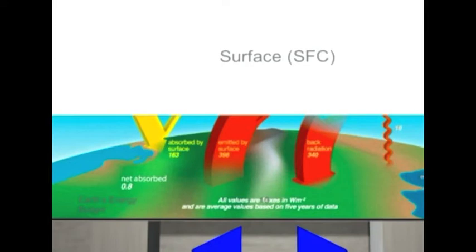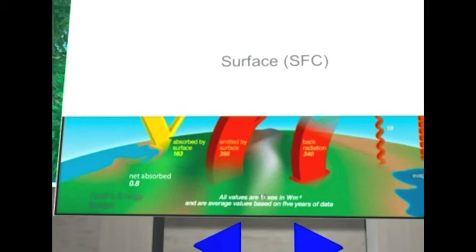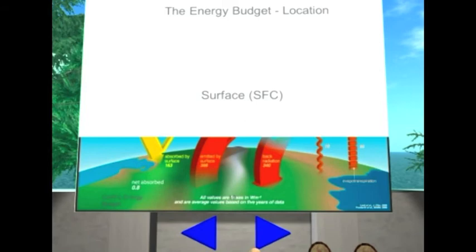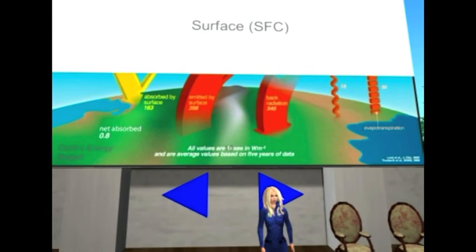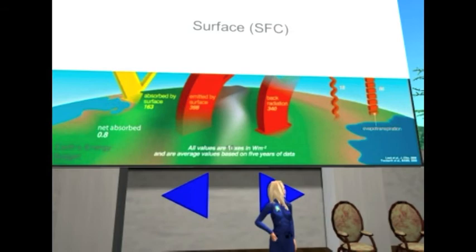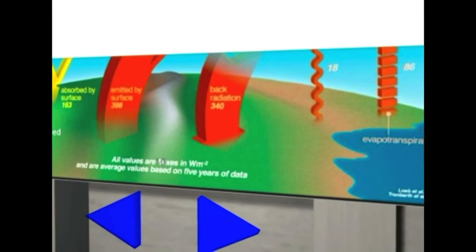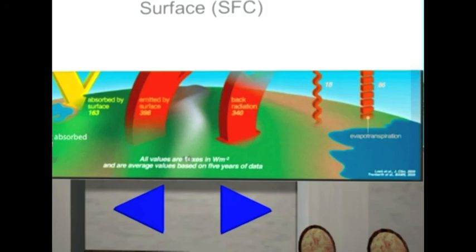And the reason that happens is because of this factor right here. Gases in the atmosphere return some of this heat back to the surface. And then if you add all these up with the right sign, you have these other things. And this is evaporation and convection. So thunderstorm systems, heat rising in the atmosphere. That's what actually causes the balance at the surface.